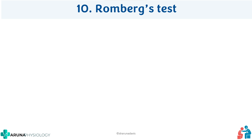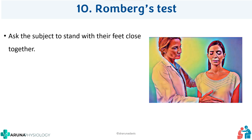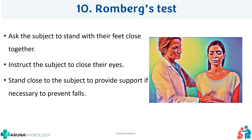Finally, we have Romberg's test. Romberg's test is specifically for dorsal column pathology lesions, and also if there is any cerebellar lesion it will be positive. Ask the subject to stand with their feet close together, then instruct the subject to close their eyes. You must provide support so that if the patient falls, you will be able to hold them — you need not touch the subject, just keep your hands ready in case they fall. Remember: feet close together and eyes closed.